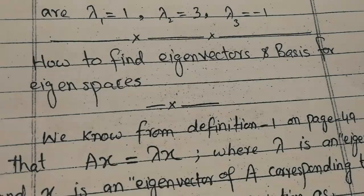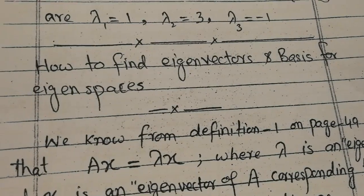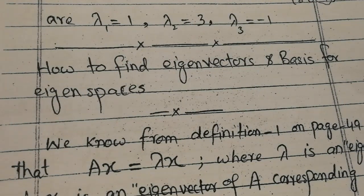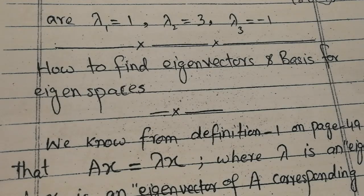As-salamu alaykum dear students. In the previous video I discussed eigenvalues, characteristic equations and polynomials, and the method to find eigenvalues of a particular matrix. In this video I will discuss how to find eigenvectors associated to a particular transformation matrix and also how to find the basis for eigenspace.